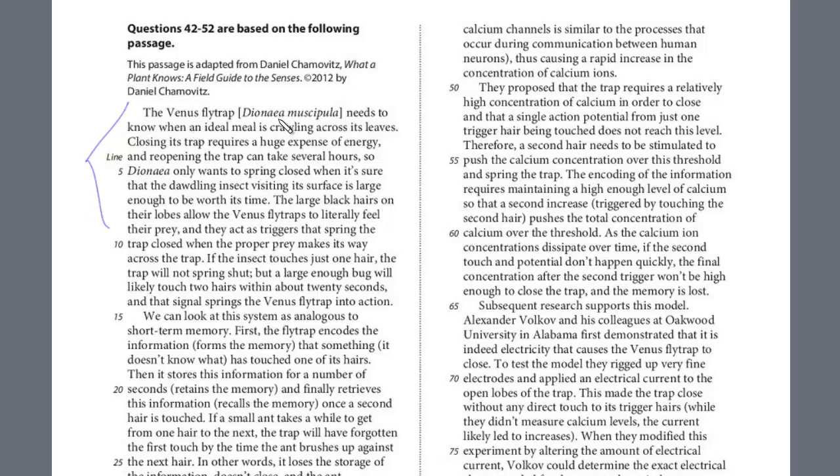The Venus flytrap, Dionaea muscipula, needs to know what ideal mate is crawling across its leaves. Closing a trap requires a huge expense of energy, and reopening the trap can take several hours, so Dionaea only wants to spring close when it's sure that the dawdling insect visiting its surface is large enough to be worth its time. The black hairs on their lobes allow the Venus flytrap to literally feel their prey, and they act as triggers that spring the trap close when the proper prey makes its way across the trap. If the insect touches just one hair, the trap will not spring shut, but if it's a large enough bug, it will likely touch two hairs within about 20 seconds, and that signals the Venus flytrap into action.